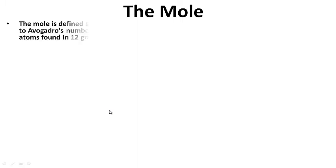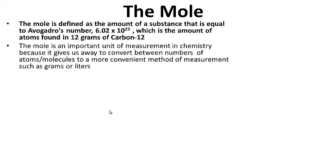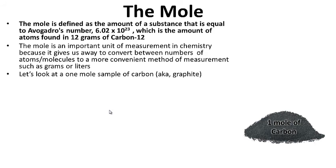The mole is defined as the amount of a substance that is equal to Avogadro's number, 6.02 times 10 to the 23rd, which is the amount of atoms found in 12 grams of carbon-12. The mole is an important unit of measurement in chemistry because it gives us a way to convert between numbers of atoms or molecules to a more convenient method of measurement, such as grams or liters. Let's look at a one-mole sample of carbon — aka graphite. So we have one mole of carbon right here; remember, it's a quantity or amount.